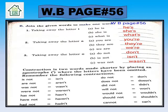Now for the third group, we are taking away the letter 'o'. The word 'do not' — we write 'do' and remove the 'o' between 'n' and 't', making 'don't'. For 'is not', we remove the 'o' between 'n' and 't' and put an apostrophe, then write 't'. For 'was not', we again take off the letter 'o' between 'n' and 't'.